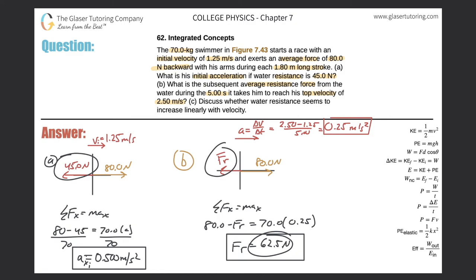And then let us see: Discuss whether water resistance seems to increase linearly with velocity. So, no, it does not actually. If we notice, the velocity doubled—it was initially at 1.25 and then in the final case here the velocity was 2.5. So the velocity doubled, but what did the resistive force do? Well, the resistive force went from 45 to then 62.5. So it's not a linear relationship. They didn't increase proportionally the same.